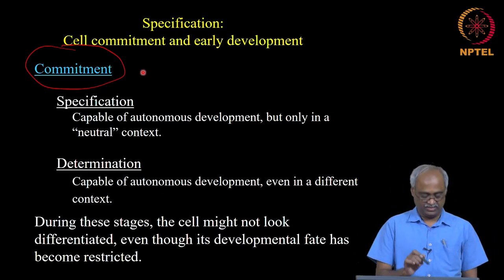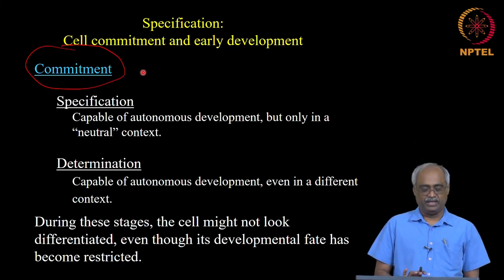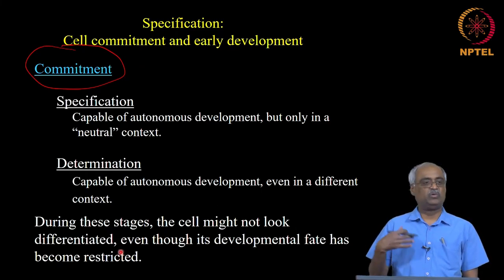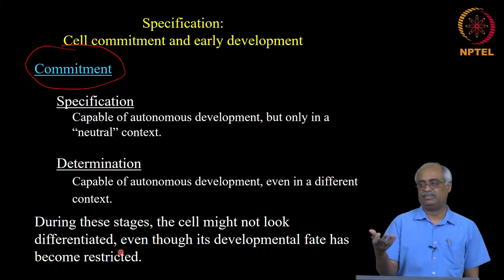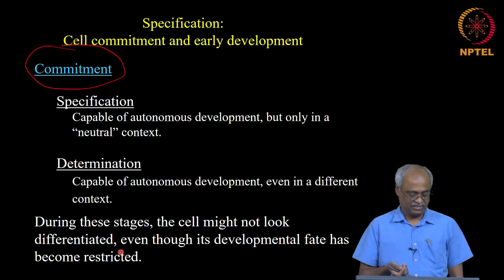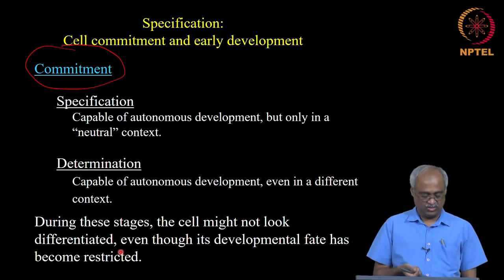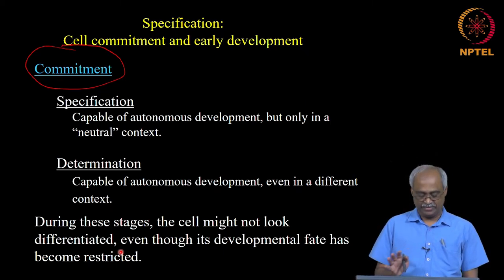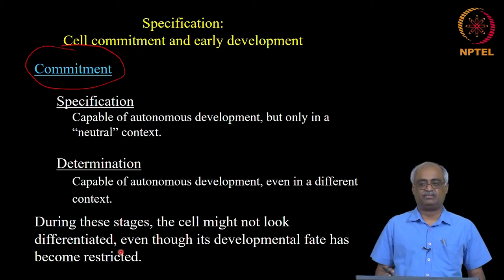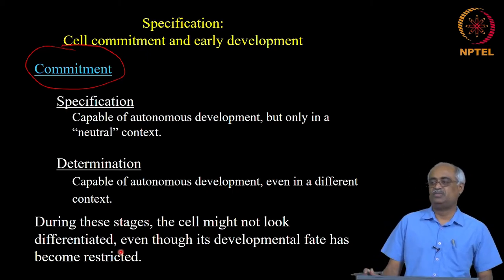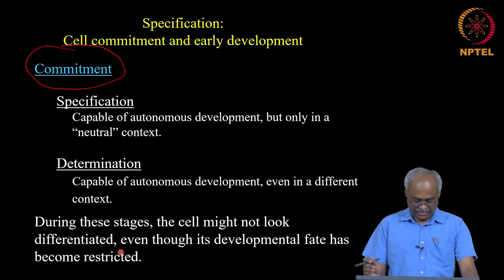These two — specification and determination — are subclasses of commitment. Even after determination, cells might not yet look like fully differentiated ones morphologically or biochemically; for example, they may not yet be producing casein. But all is already set for that final differentiated state. Now we will look at different types of specification and where they play important roles.